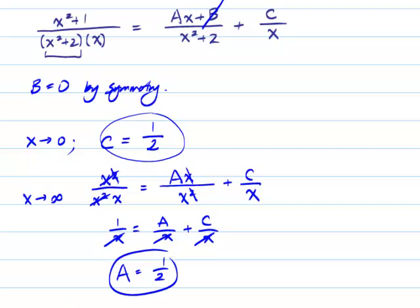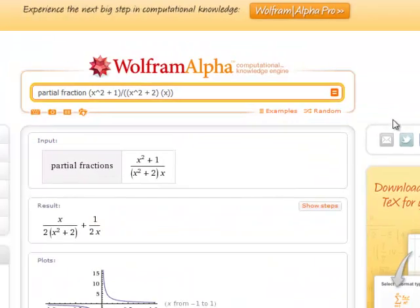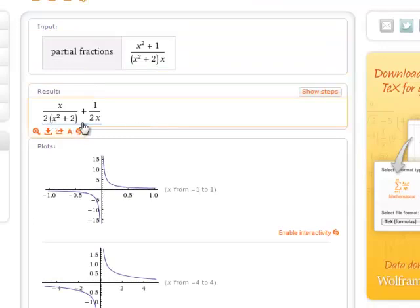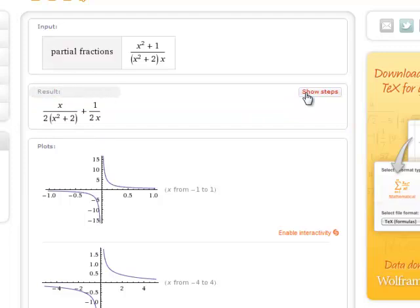So, I've done this problem, not by the traditional method, but I did it using Wolfram Alpha, which is a useful tool at wolframalpha.com by which you can do these partial fractions. And I plugged this partial fraction that we just did in, and I found, yes indeed, we got the exact answers that we talked about. Note that b is 0, a is 1 half, and c is 1 half.